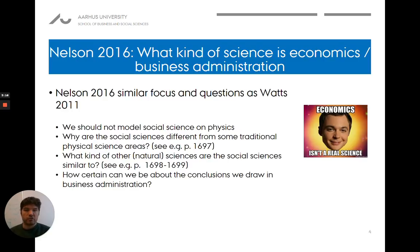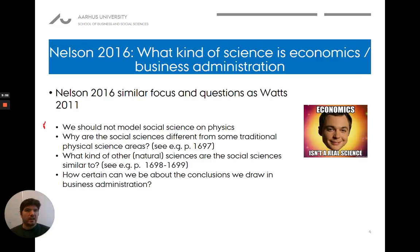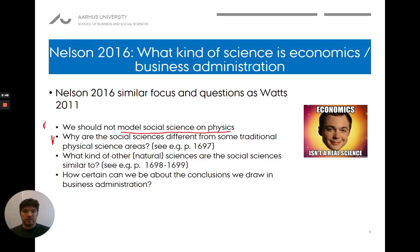Nelson's text is trying to make us reflect on what kind of science economics or business administration is. One of the key things he wants to say is that we sometimes hear — whether from politicians or scientists — that physics is the proper science, and if something can't be as robust and clear as physics, then it's not really proper science. In contrast, Nelson is saying we should not model social science on physics, and he's explaining why the social sciences are different and why that matters.